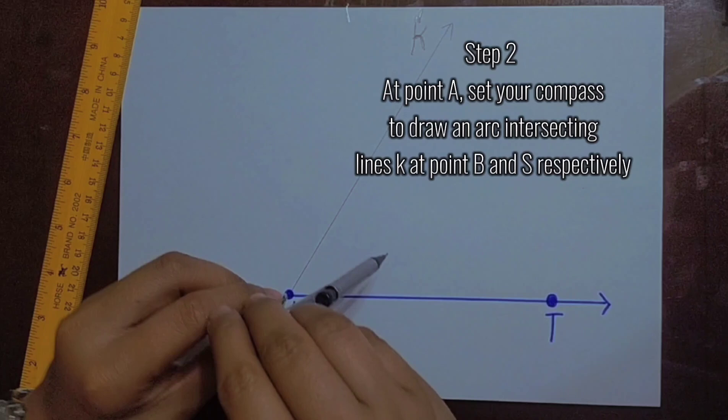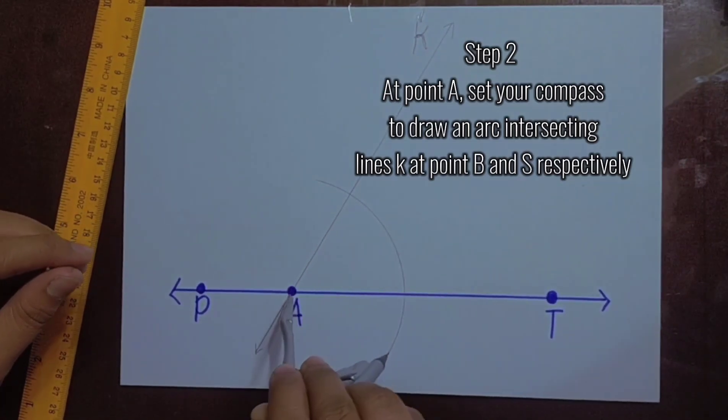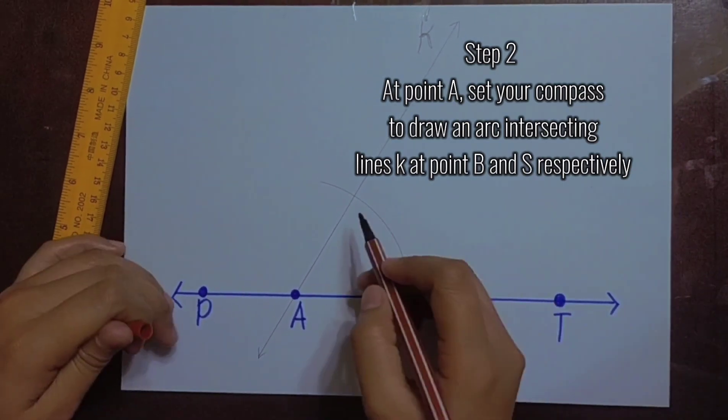Step 2: At point A, set your compass to draw an arc intersecting line K at point B and S respectively.